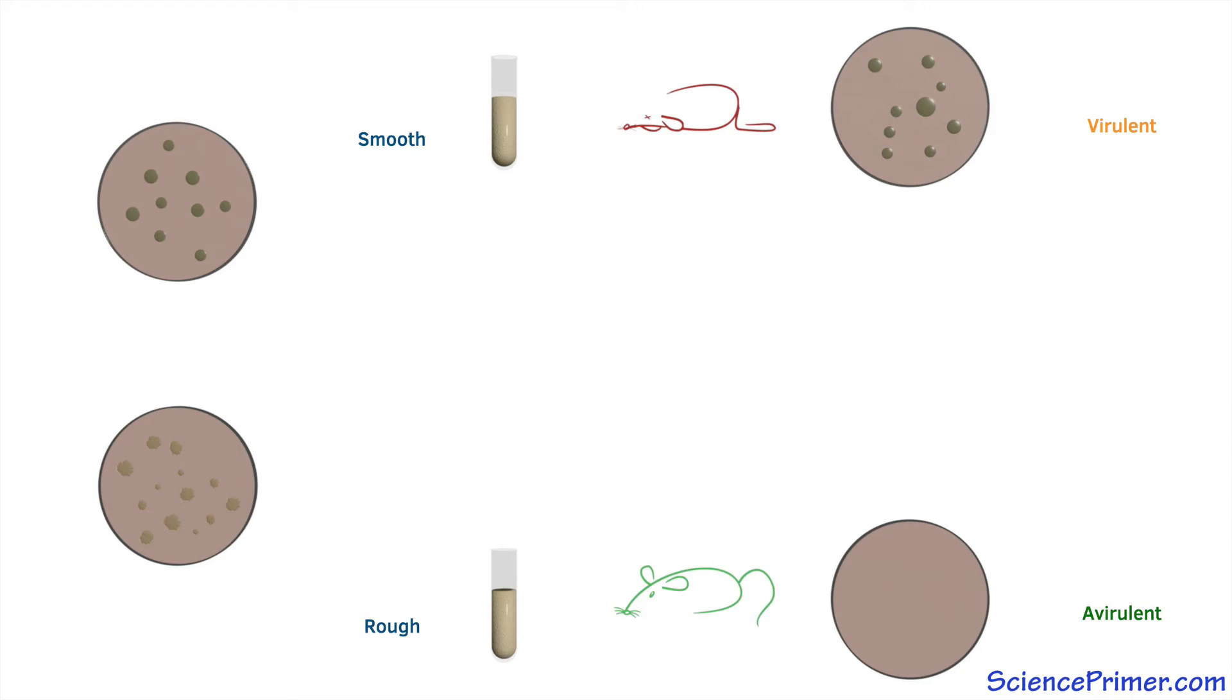Griffith also worked with heat-killed cells and showed that like the avirulent rough strains, heat-killed cells from virulent strains did not cause disease in mice. This might seem like an odd experiment to perform, but both avirulent strains and heat-killed cell debris from virulent strains are tools that can be used in vaccine development.